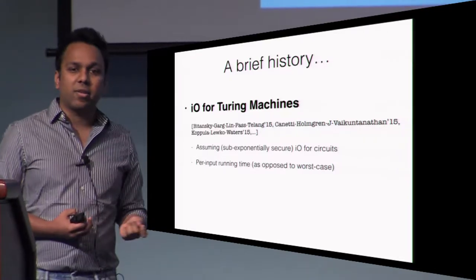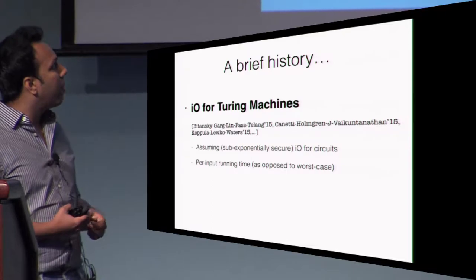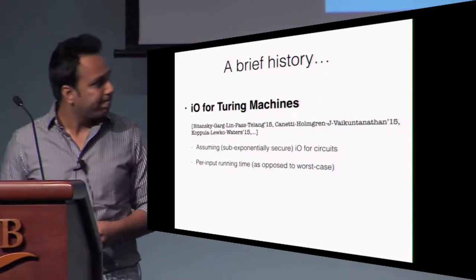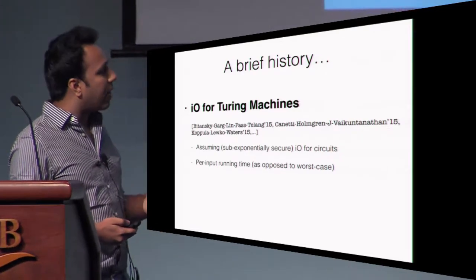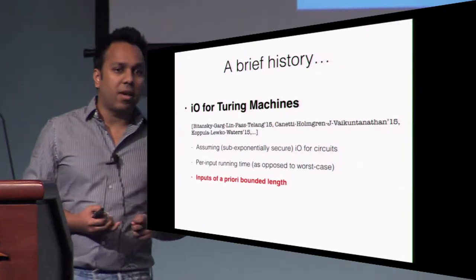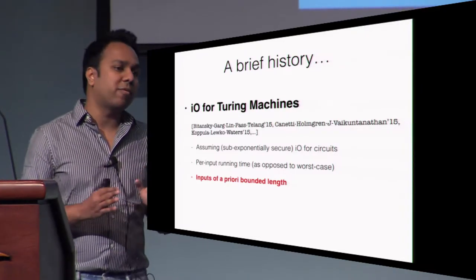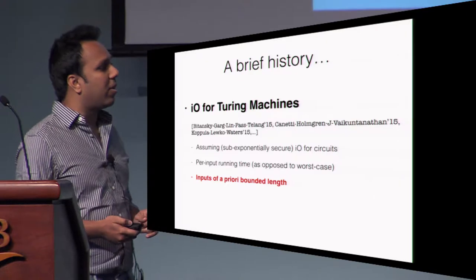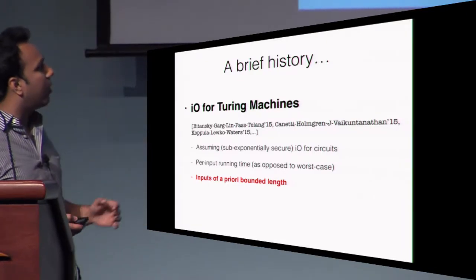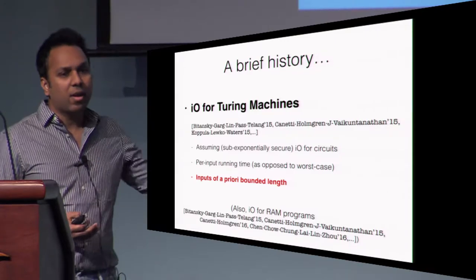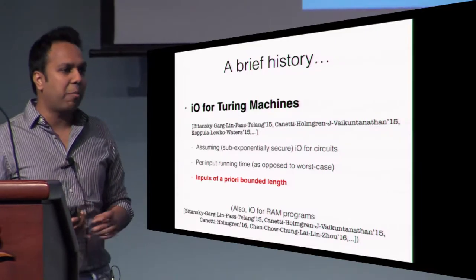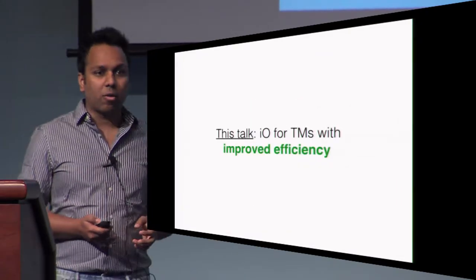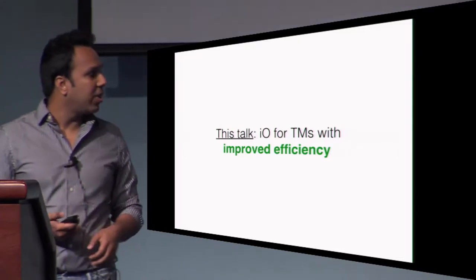One of the main advantages of these works is that they achieve per-input running time as opposed to the worst-case running time on inputs that is inherent in the circuit model. One caveat of these works is that correctness only holds for inputs of some a priori bounded length. While in this talk I'll only focus on I.O. for Turing machines, let me mention that there are also lots of important works that extend these results to the regime of obfuscating RAM programs. Our goal here is to construct obfuscation of Turing machines with better efficiency.